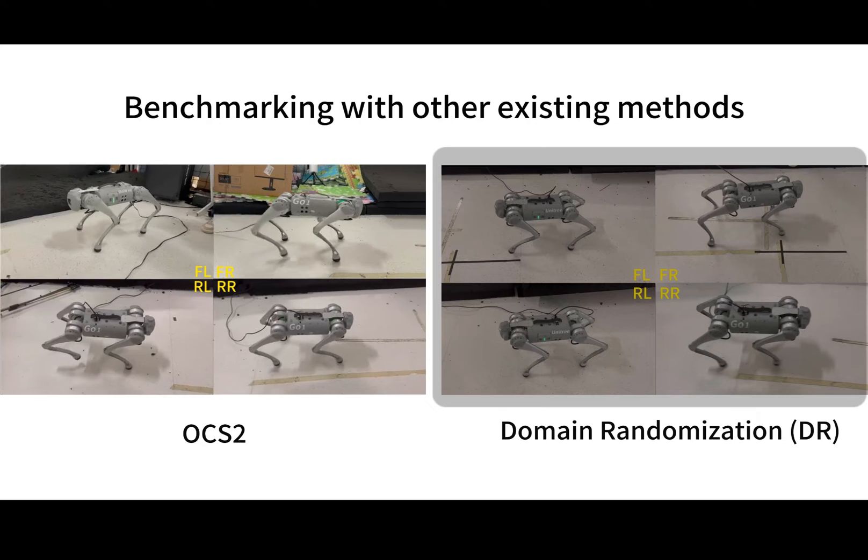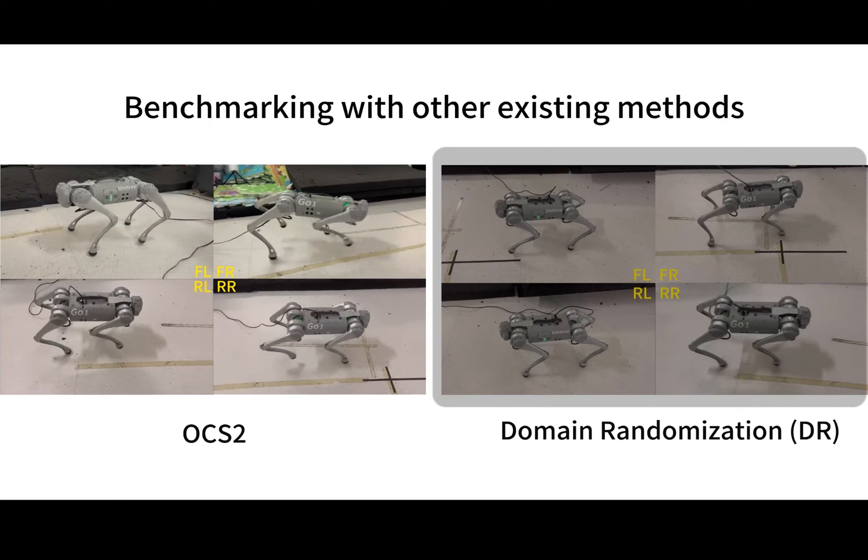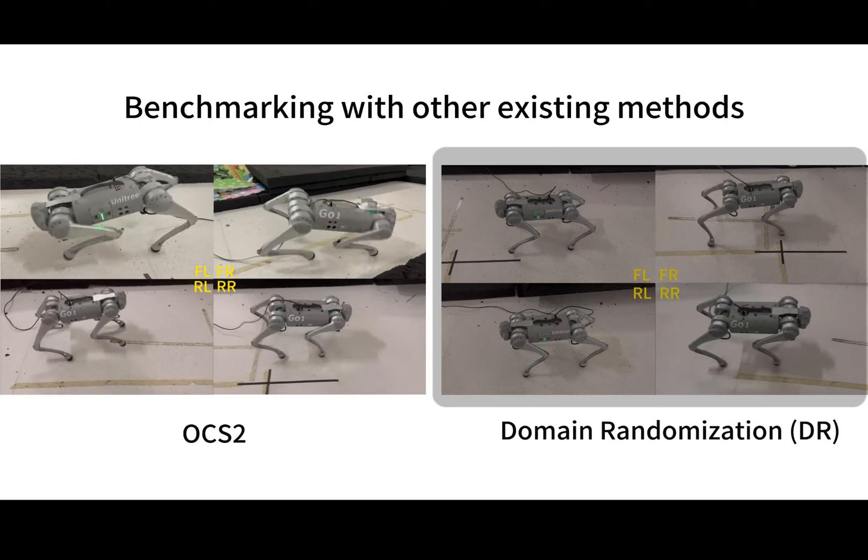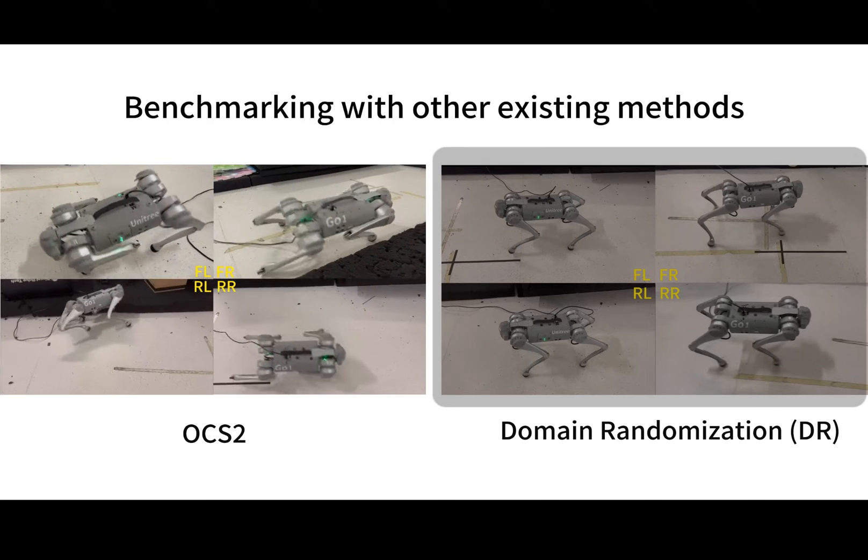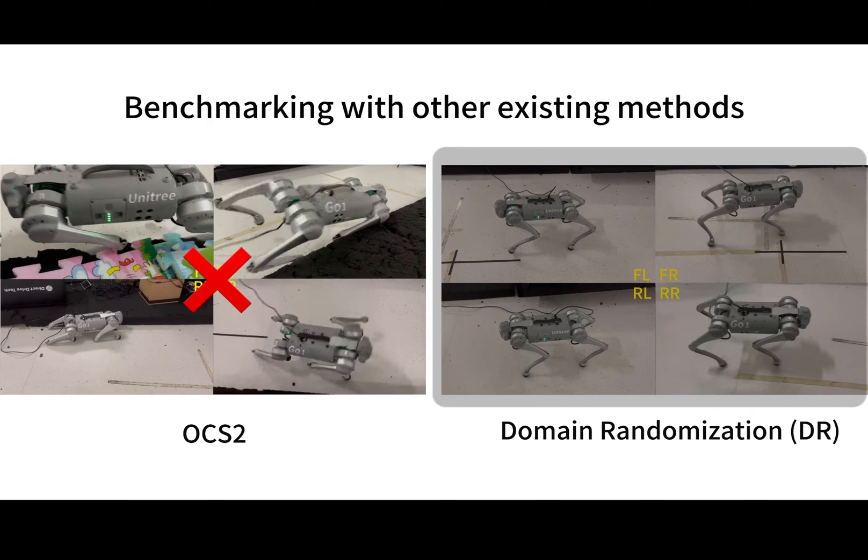The FtNet is benchmarked with other existing controllers, including the state-of-the-art model predictive controller, OCS2, and the commonly used methods to train a robust control policy, domain randomization.